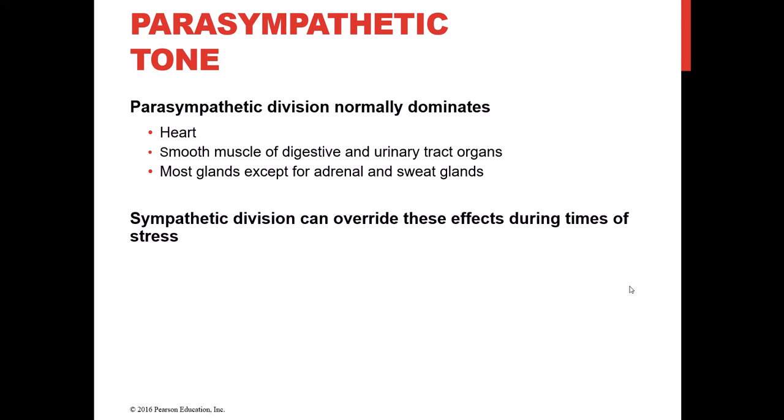Parasympathetic tone typically refers to the heart, the GI and urinary tract organs, and most glandular tissue — endocrine glands, the pancreas, the liver — except the adrenal glands and sweat glands, which are sympathetic only. For most of us most of the time, the parasympathetic division really controls and dominates the functions of the heart, GI and urogenital tracts, and the endocrine system. When we are stressed, the sympathetic division takes over until the stress has passed, then parasympathetic kicks back in to restore homeostatic maintenance levels.